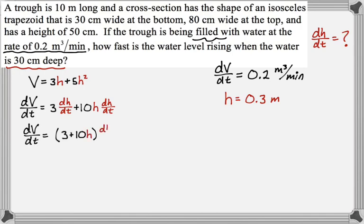So it's 3 plus 10H, and then dH/dt. Okay, and now I know my values. I have 0.2 for dV/dt. I have 0.3 for H, and I'm actually trying to solve for dH/dt.